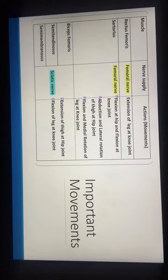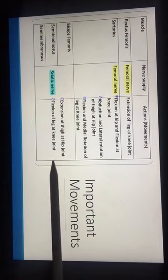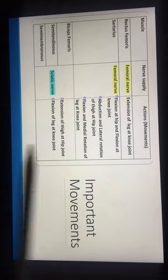I've noticed that muscles supplied by the nerves we're studying in this block appear very frequently in progress tests. For example, the biceps femoris and semimembranosus are both responsible for extension of the thigh at the hip joint and flexion of the leg at the knee joint.